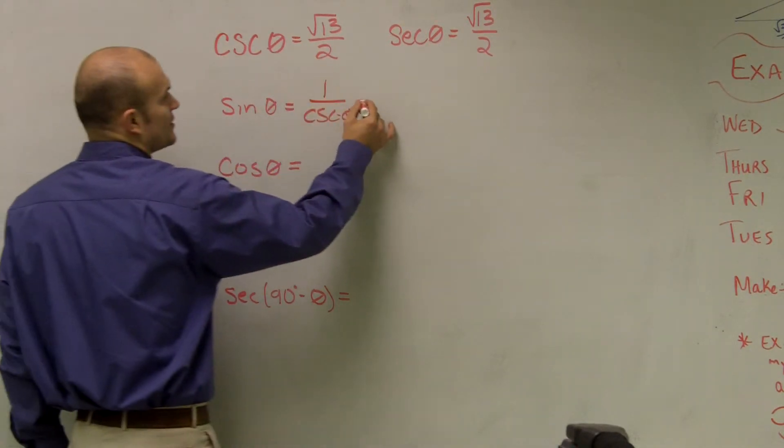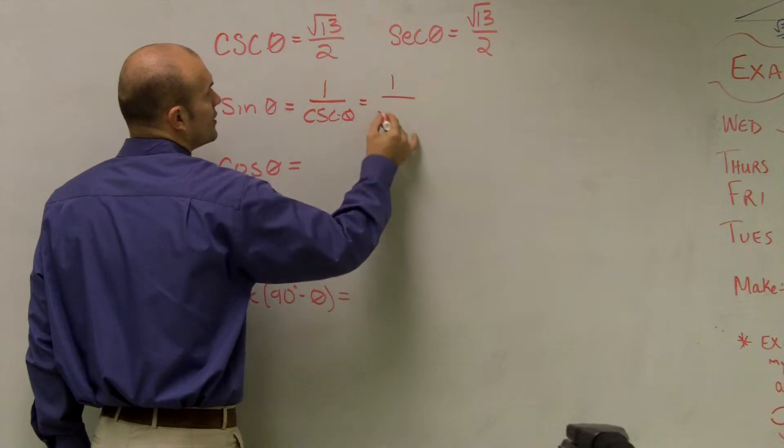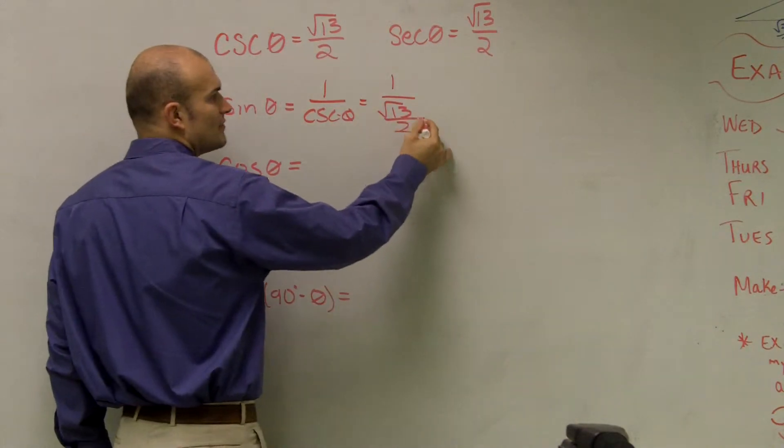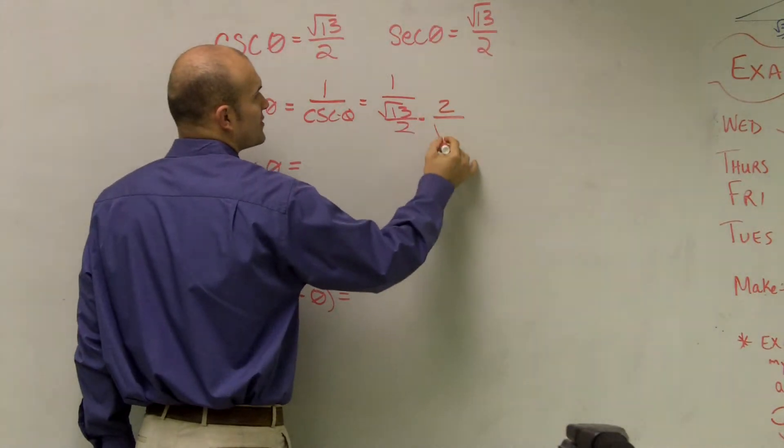So therefore, I can rewrite this as 1 over the square root of 13 over 2, which, to get that off the bottom, I have to multiply by the reciprocal.